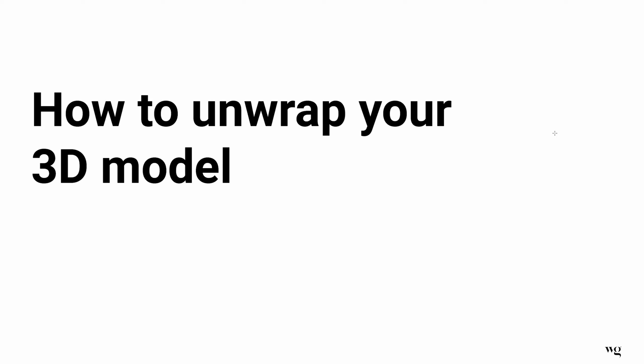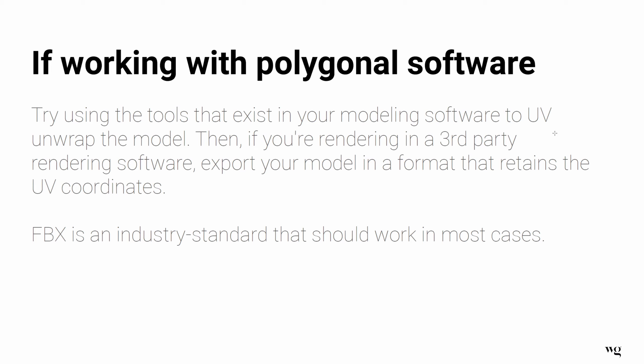So how do we actually unwrap our 3D model? If you're working within polygonal software like 3ds Max, Maya, Cinema 4D, or Blender, they have built-in tools to assign UV coordinates and unwrap the model. Use those built-in tools rather than relying on a third-party tool. Once done, export your model — like an FBX file, which is an industry standard mesh format — and bring it into Keyshot. The UV map is contained within the 3D geometry, so the UV data will carry through into your render software.